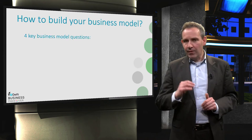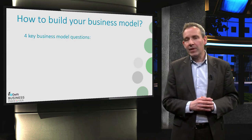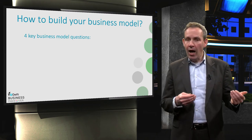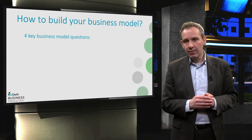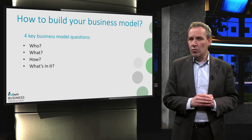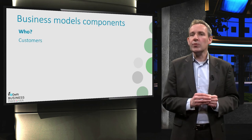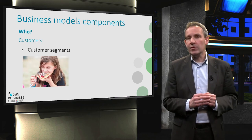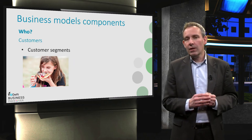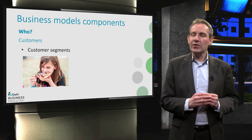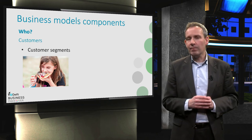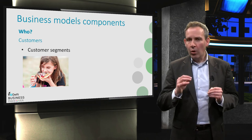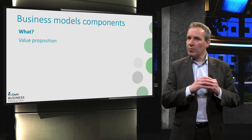Let's start with the four main components of any business model, and we do this with four simple questions: who, what, how, and what's in it. The first main question is who — that means who are your customers that you create value for. Maybe there are several groups of customers or segments that you want to target. We'll get back to this important question in the next video about customer segmentation. The second main question is what — what do we offer our customers? What is the value proposition?